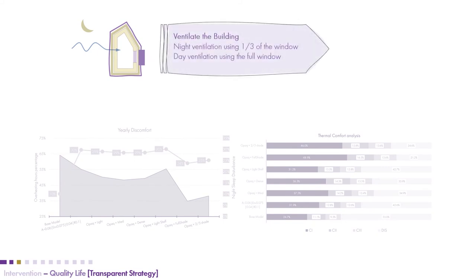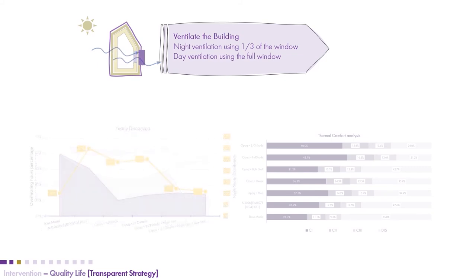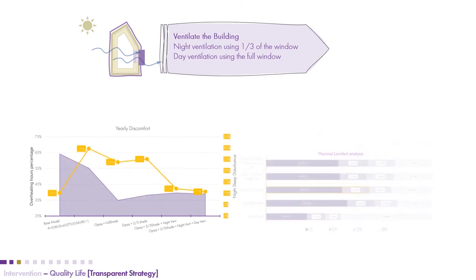Next we tested the ventilation of the building. For natural ventilation at night, we assumed only one-third of the window would allow ventilation, while during the day the whole window would be open. This had a very drastic positive effect on night cooling, night sleep discomfort, and daytime comfort. We noticed that ventilation was a very key factor in improving the thermal comfort of the building.